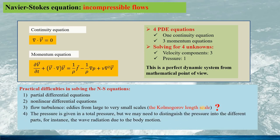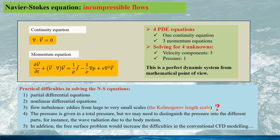And for wave energy conversion, we may also have difficulty here: the pressure is normally given as the total pressure if we solve the Navier-Stokes equation directly. But in reality, we might need to distinguish the pressure into different parts, for instance the parts corresponding to wave radiation due to the structure motion. In addition, the free surface problem would add more difficulties in conventional CFD modeling, in both computational time and the multi-phase problem.